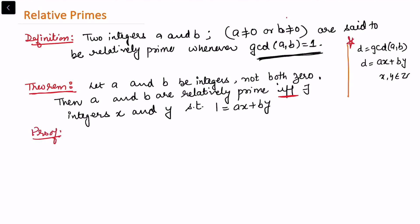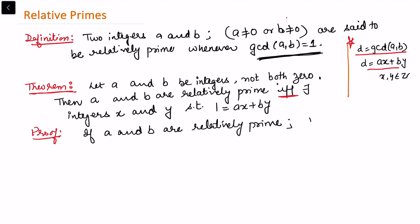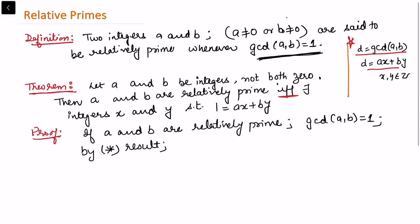The proof of this theorem is straightforward. From the previous result, whenever d is the gcd of a and b, I can always write it as a linear combination. Let us prove: if a and b are relatively prime, then what is given is that they are relatively prime, so by definition gcd(a,b) = 1. Using the star result proved in the last video, this implies 1 = ax + by is satisfied for some integers x and y.